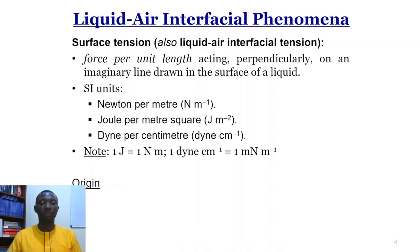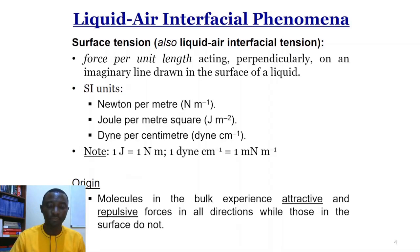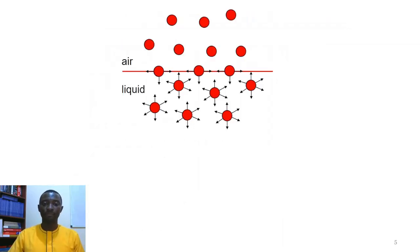What is the origin of surface tension? Consider a liquid in a container. Some liquid molecules will be at the surface of the liquid, while others will be in the bulk. Molecules in the bulk experience attractive and repulsive forces in all directions, as opposed to those at the surface, which will not. The bulk molecules have forces in all six directions, while surface molecules experience these forces in only one direction.